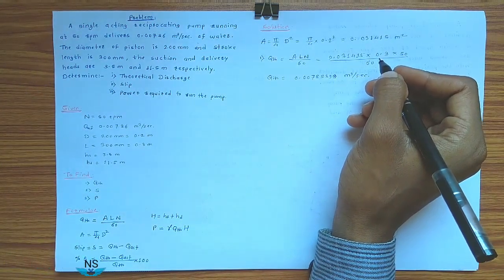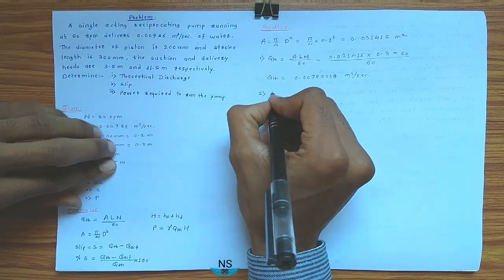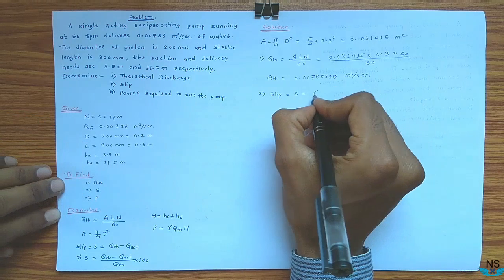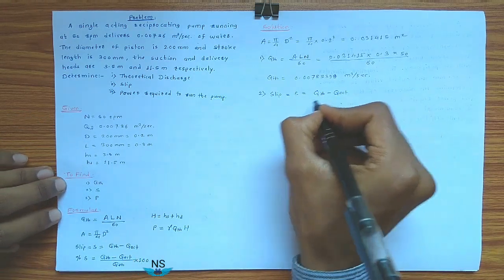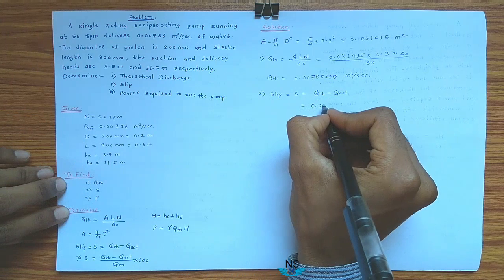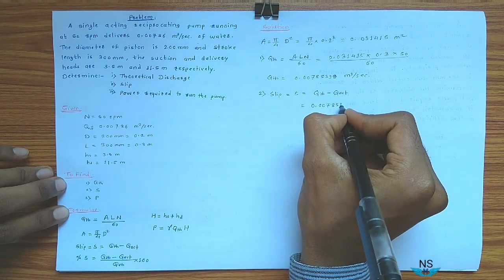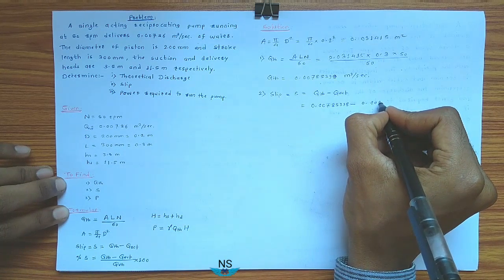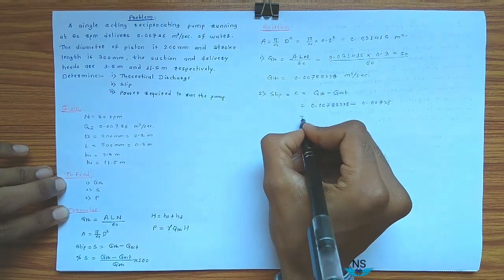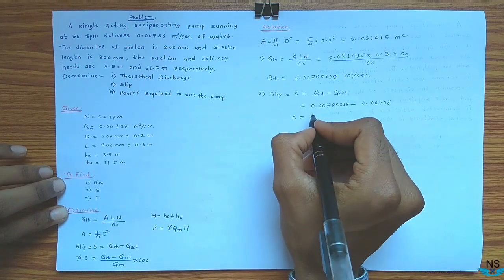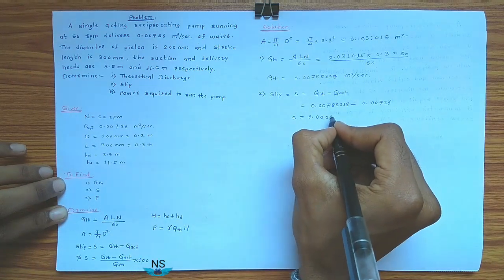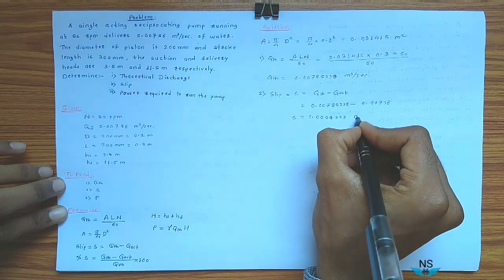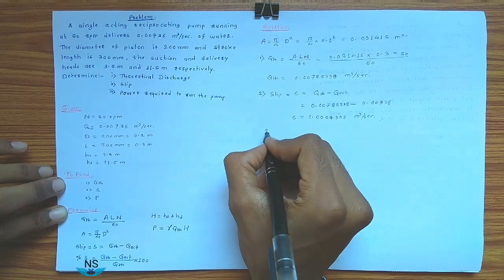Second, slip: S is equal to Q_theoretical minus Q_actual, that is 0.00785398 minus 0.00736. So slip S is equal to 0.0004939 m³ per second. So this is the slip.